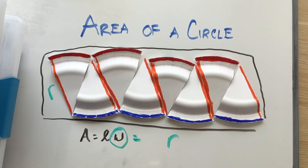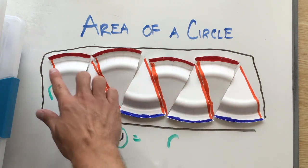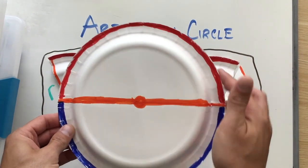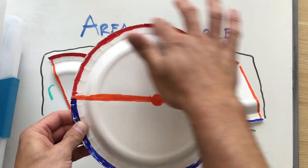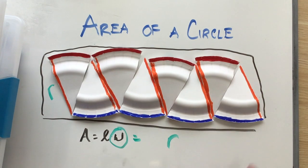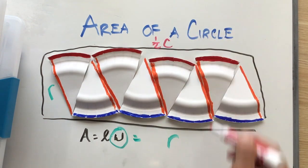Now, here's the tricky part: how do I figure out what the length is? Well, if you look closely, the length is just half the circumference. So my length is half the circumference. I've got the same half on top and the same half on bottom. So my length is one half the circumference.